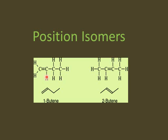Similarly, in case of position isomerism, the unsaturation place can also be changed. Here the double bond is present on carbon number 1, so we will get 1-butene. As the double bond represents alkenes and we have 4 carbon atoms, it will be butene. While in the second isomer, we have the double bond on the second carbon atom, and it will be known as 2-butene. Students, notice that the chain length will remain the same — only the position of unsaturation has changed.